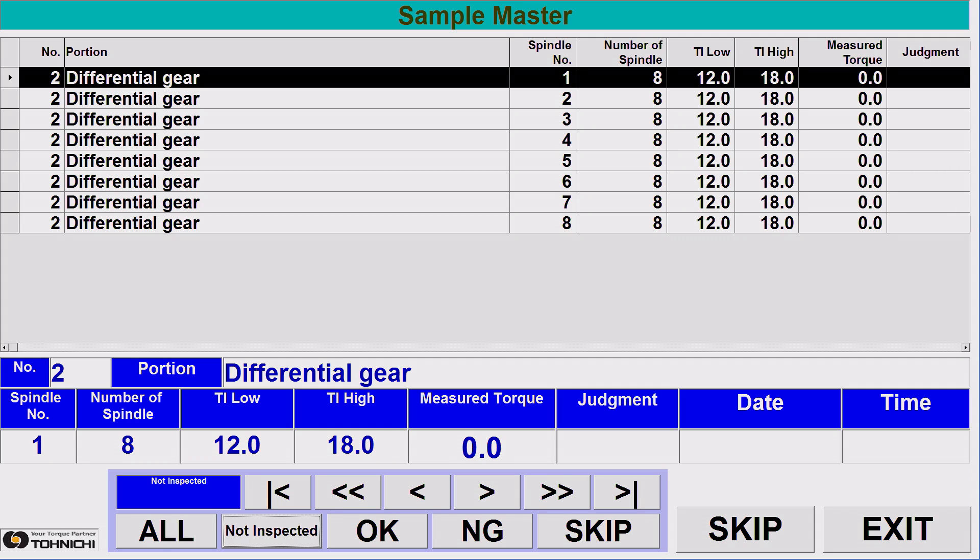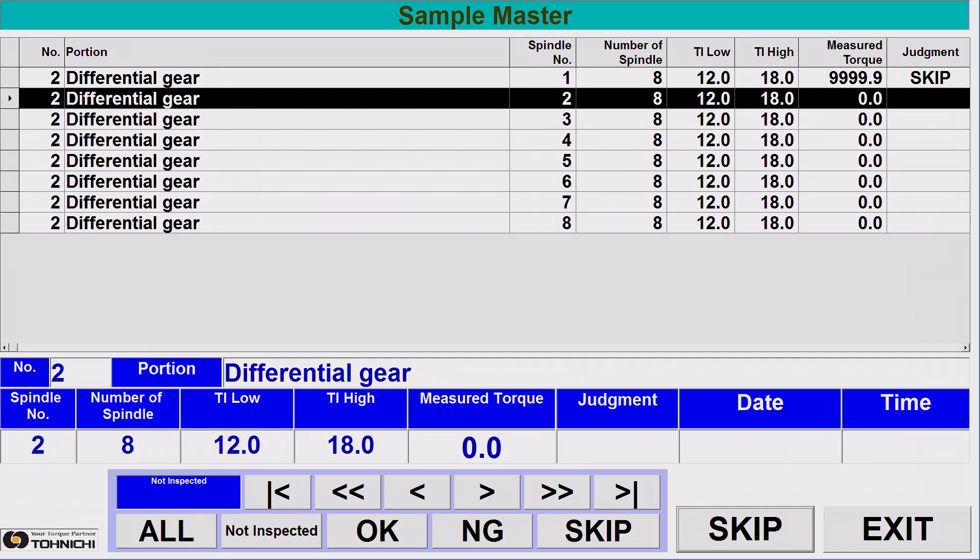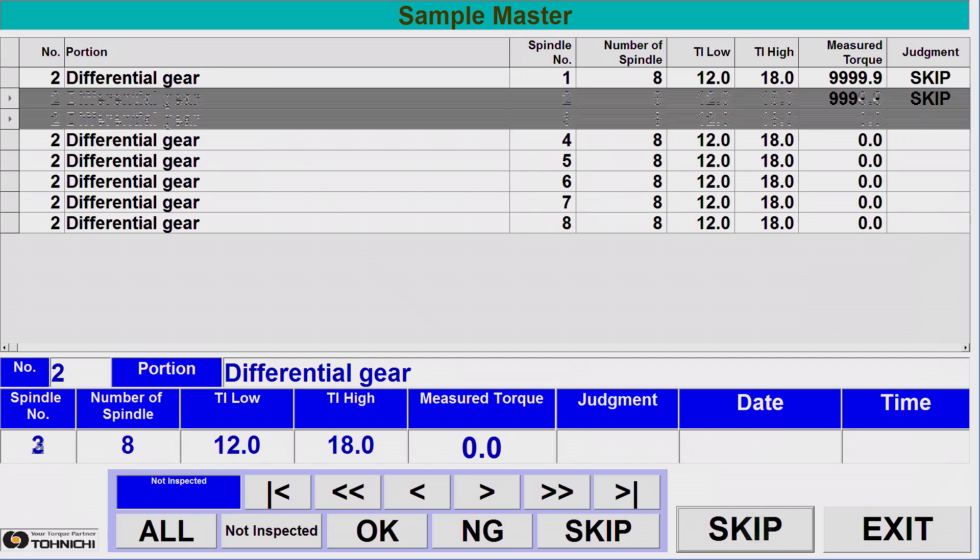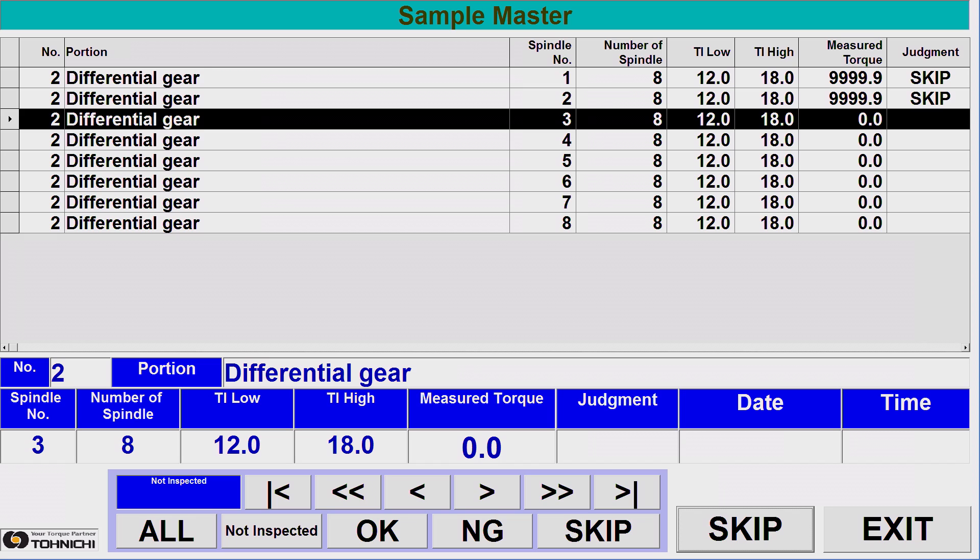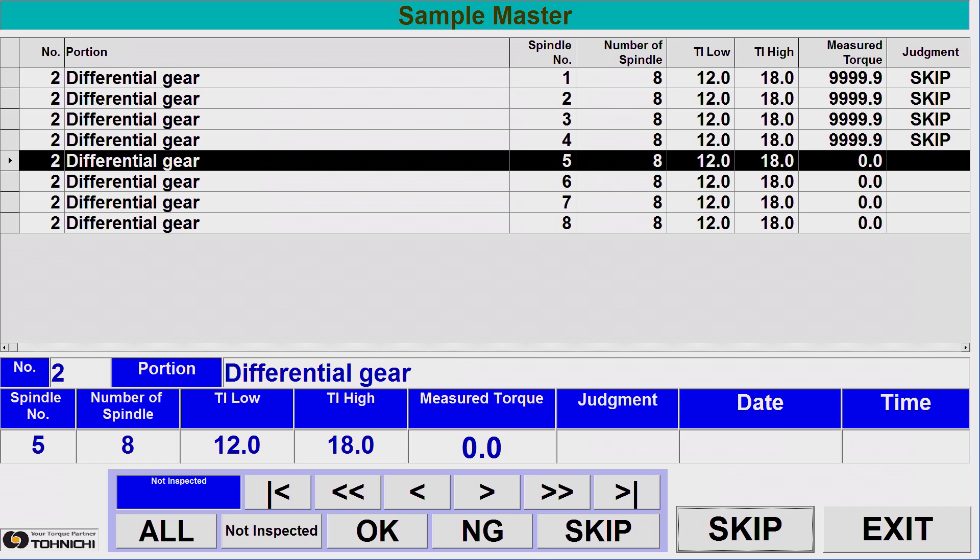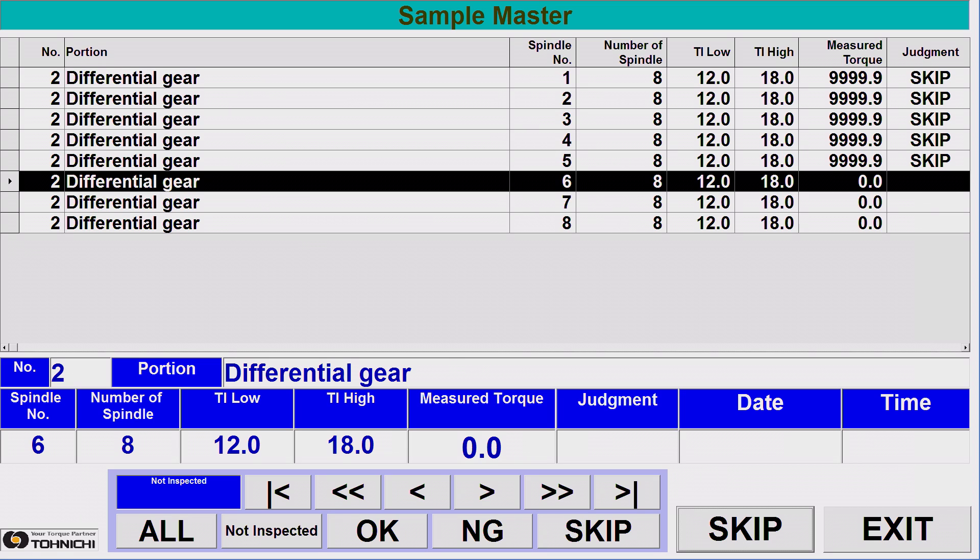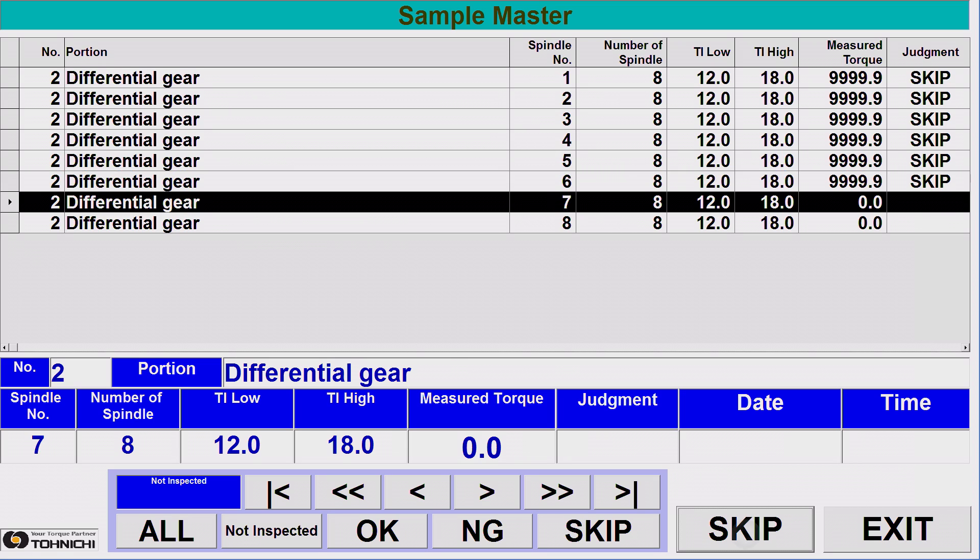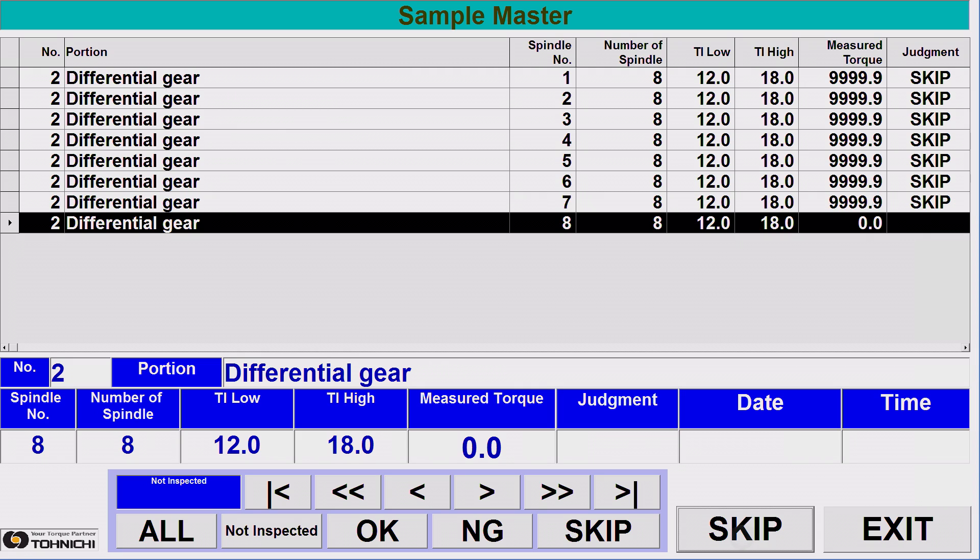On the previous process check, you could notice the process of differential gear remains. If there is any reason for not carrying out the process, press skip key to pass the process. For past process listed up by skip key and shown 999.99 on the results data column, the skipped process will not be taken into account on the statistical processing.